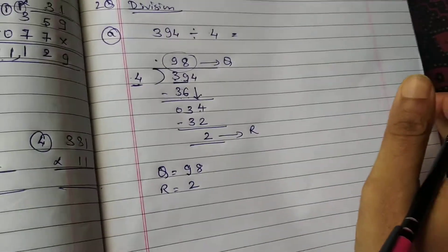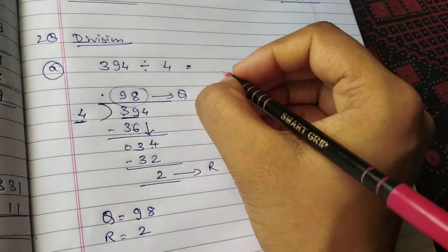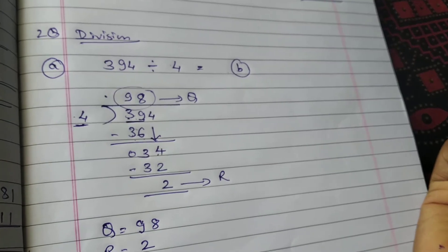See how easy. Koi tough hai? Nahin. Bohat easy hai ye toh. Okay, so bhi. Ab hum thoda sa bada number lenge.